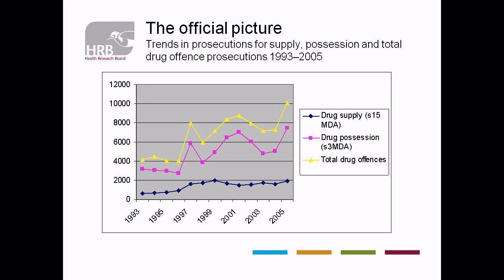The main offences that are prosecuted are possession — what we refer to as simple possession, a Section 3 offence — possession often for personal use amounts of a substance, mostly cannabis, and then drug supply, Section 15, where you are prosecuted for the possession and distribution of drugs. And then you have a couple of other offences that are dominant, such as obstruction, where you might try and throw drugs down a toilet or resist arrest.